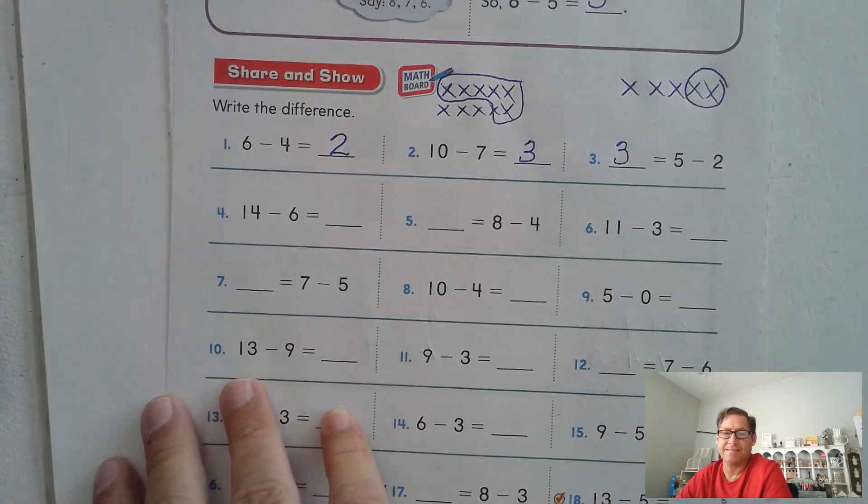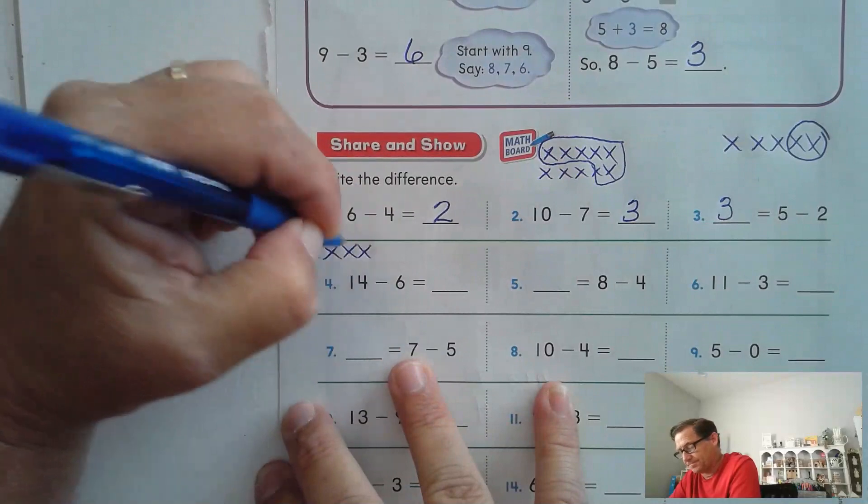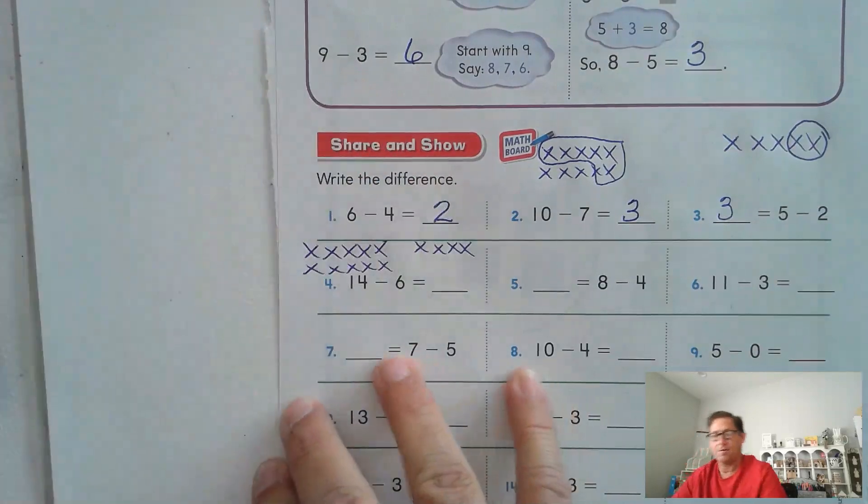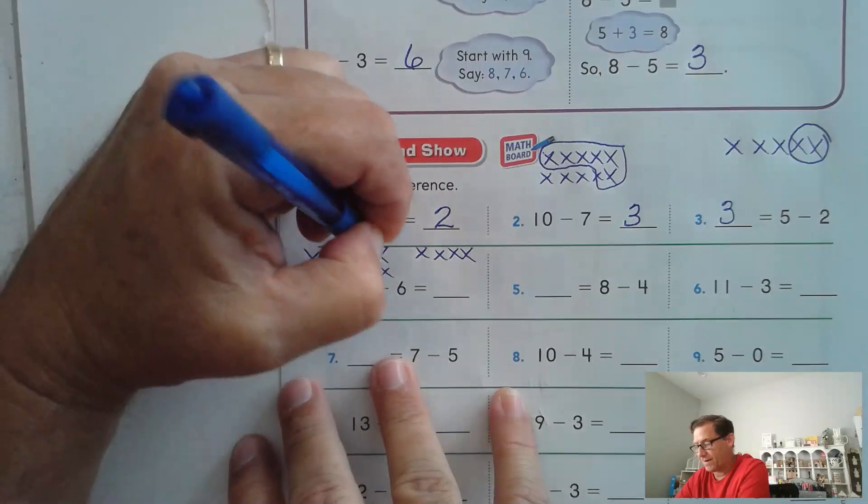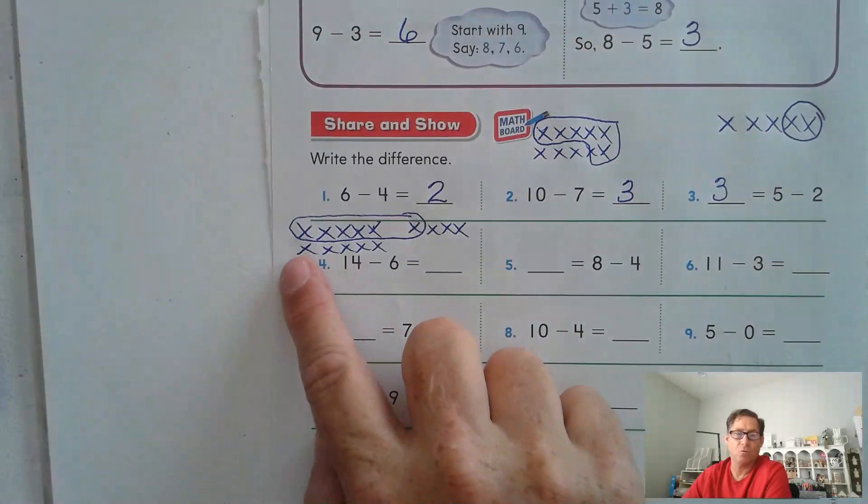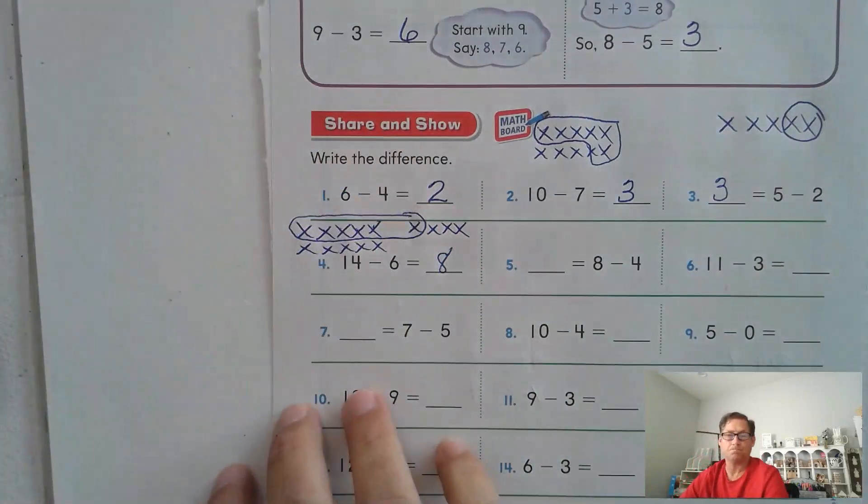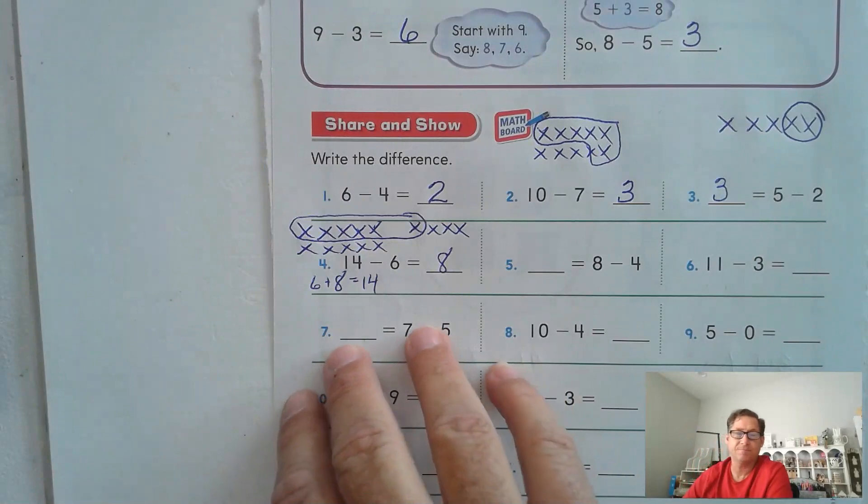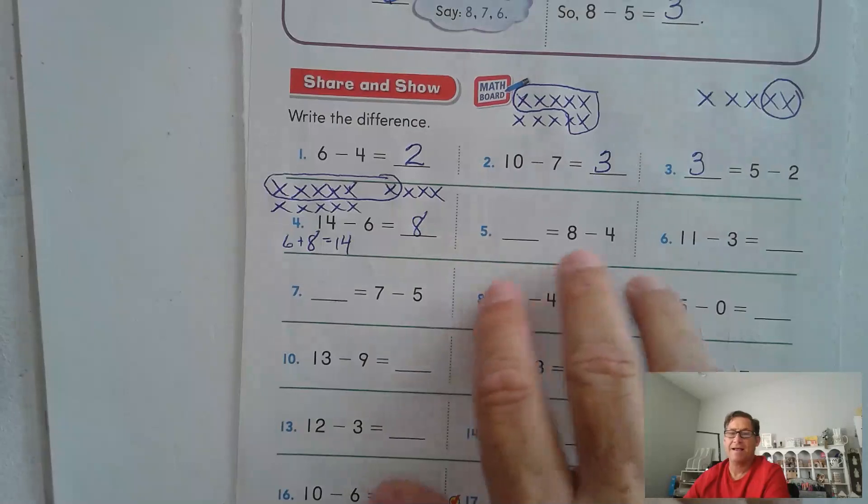14 minus 6. 6 plus what is 14? Or we can draw a picture. So there's 14, and we have to take away 6: 1, 2, 3, 4, 5, 6. How many do we have left? 1, 2, 3, 4, 5, 6, 7, 8. And 6 plus 8 is 14. So that would have been the math fact we were looking for, the addition fact that would have helped us.